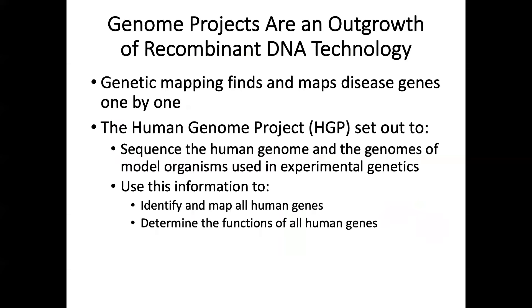The Human Genome Project, also called HGP, is an international scientific research project with the goal of determining the base pairs that make up human DNA and identifying and mapping all genes of the human genome from both a physical and functional standpoint. The HGP set out to sequence the human genome and the genomes of model organisms used in experimental genetics. After the idea was picked up in 1984 by the US government, the project was formally launched in 1990 and was declared completed on April 14th, 2003.